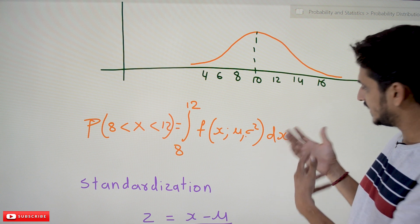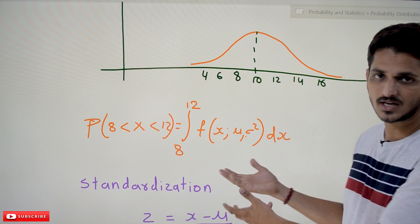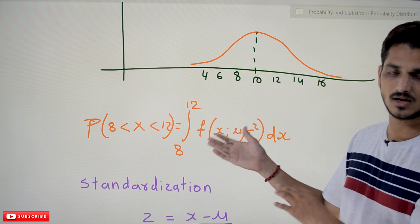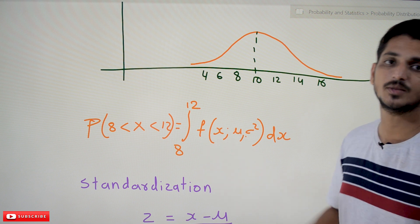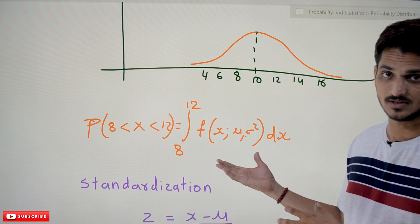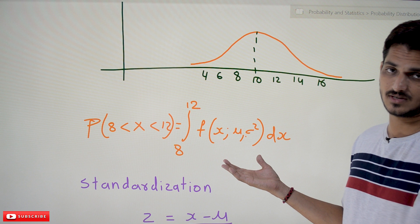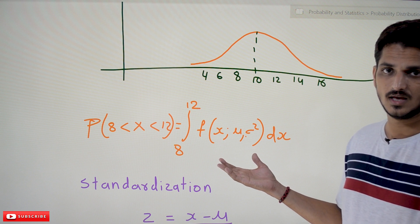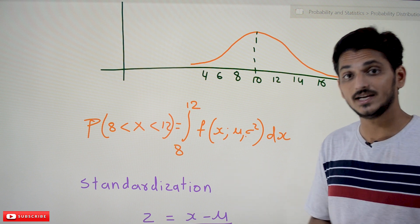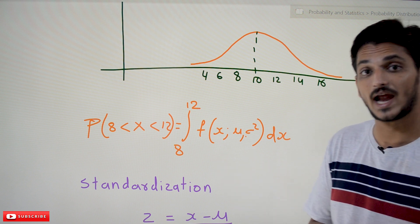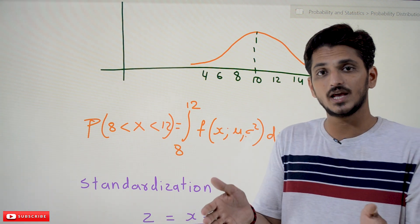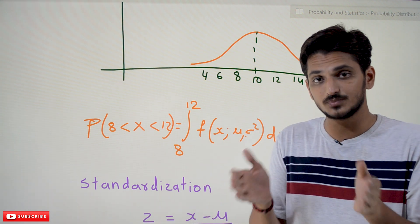To do this, we use the integral from 8 to 12 of f(X, μ, σ²) dx. We have to substitute the values and find the probability value, but this is a very difficult process — that is what we discussed in our previous classes. Is there an easier way?